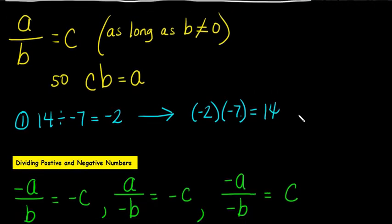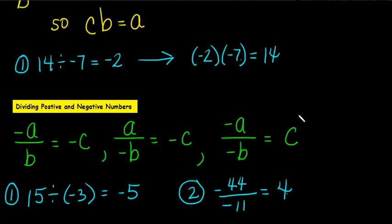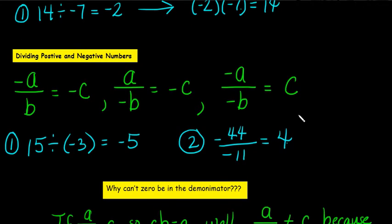What happens when we divide negative and positive numbers? Hopefully you'll see that this is similar to multiplication. Just the same when we multiply a positive and a negative, we get a negative, and when we multiply two negatives, we get a positive. It's going to be the same for division. Negative A divided by B equals negative C, A divided by negative B equals negative C, and negative A divided by negative B equals C.